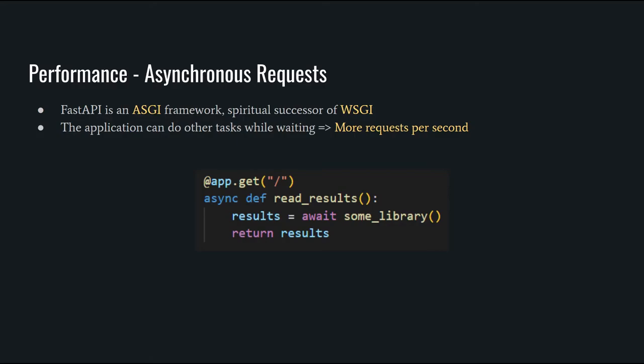FastAPI is an ASGI, or asynchronous server gateway interface, framework and supports async/await operations out of the box. This means that it can usually process more requests per second than traditional WSGI frameworks by leveraging concurrency. Instead of simply waiting for a slow operation to finish, the application can do other tasks, like attending to other requests, until the slow operation is complete.